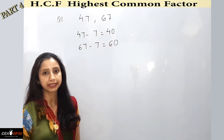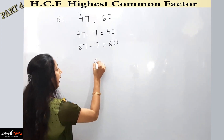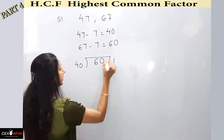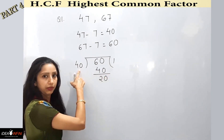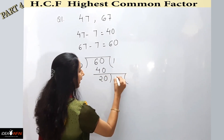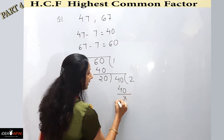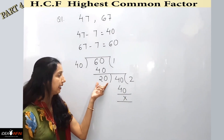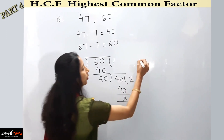Now I find the HCF of 40 and 60 using the long division method. I write 60 inside — 40 ones are 40, leaving remainder 20. The divisor from the first step becomes the dividend in the second step: 20 twos are 40, and the remainder is 0. When I get remainder 0, I stop.